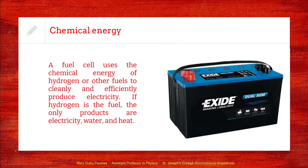The next non-conventional energy source is chemical energy. We can make different batteries or cells from which chemical energy can be produced, and this can be used to produce electricity. A common method is by means of a fuel cell. A fuel cell uses the chemical energy of hydrogen and other fuels like lithium to cleanly and efficiently produce electricity. If we are using a hydrogen fuel cell, the only products are electricity, water and heat — making it very clean.